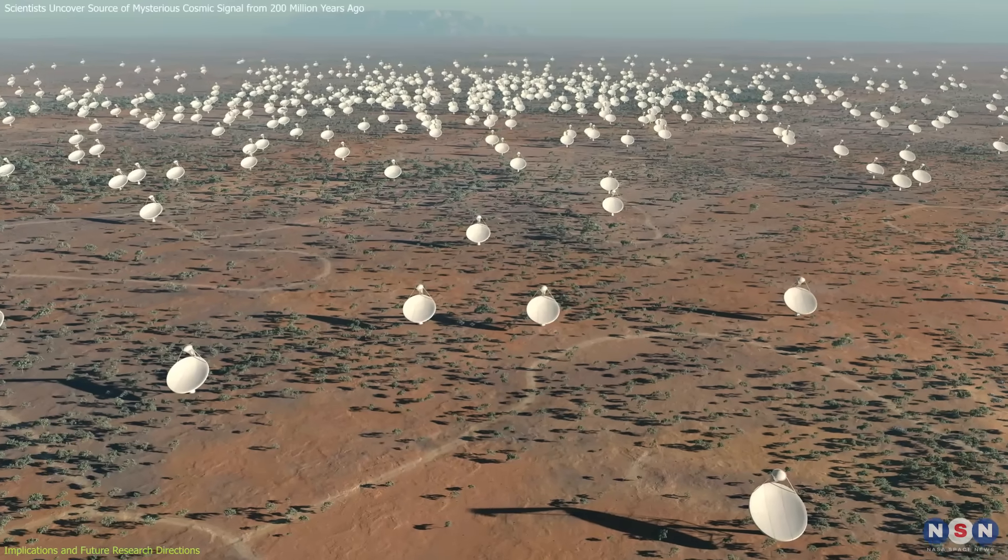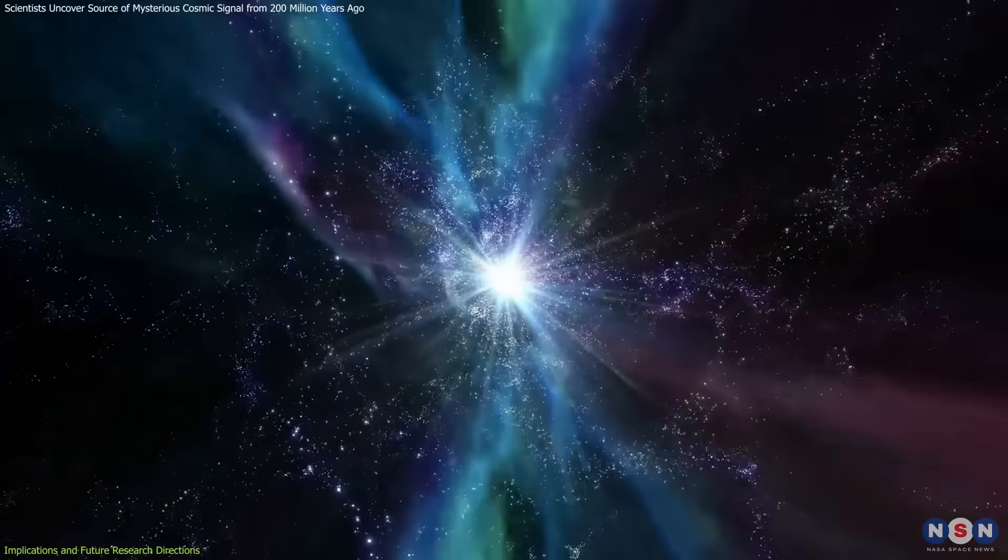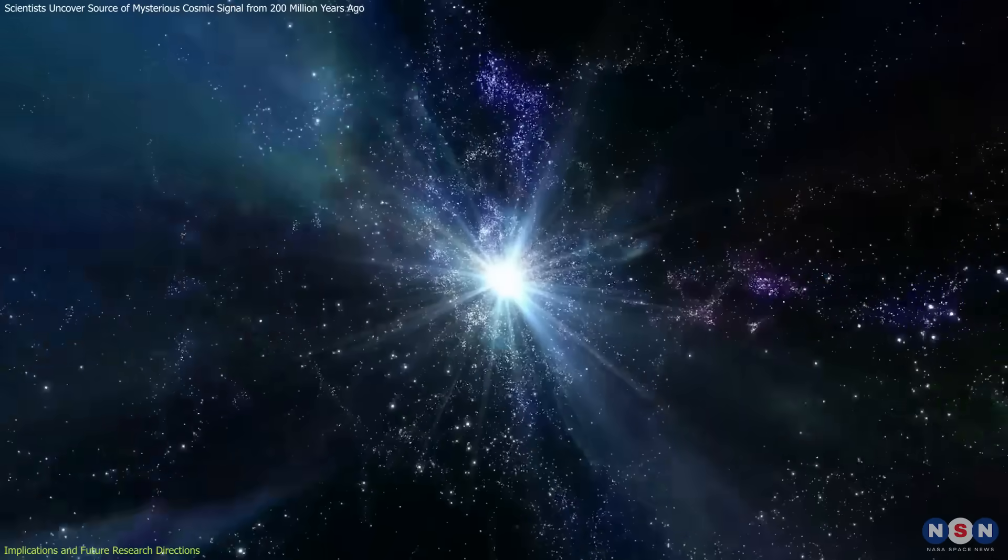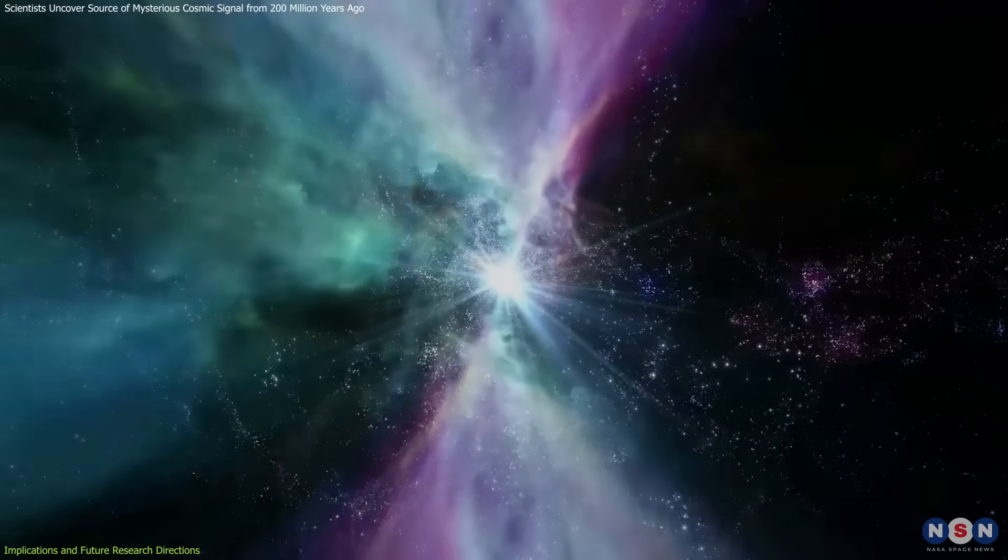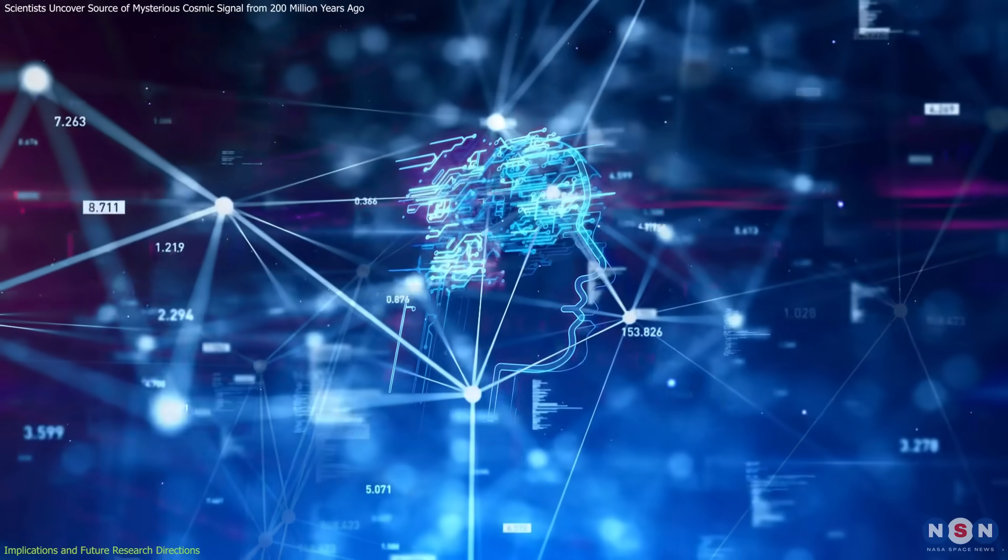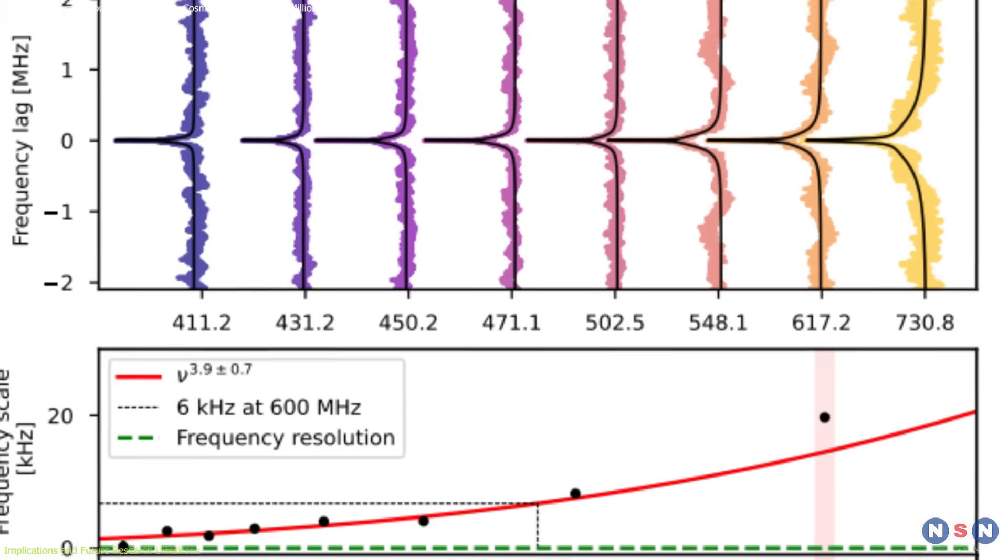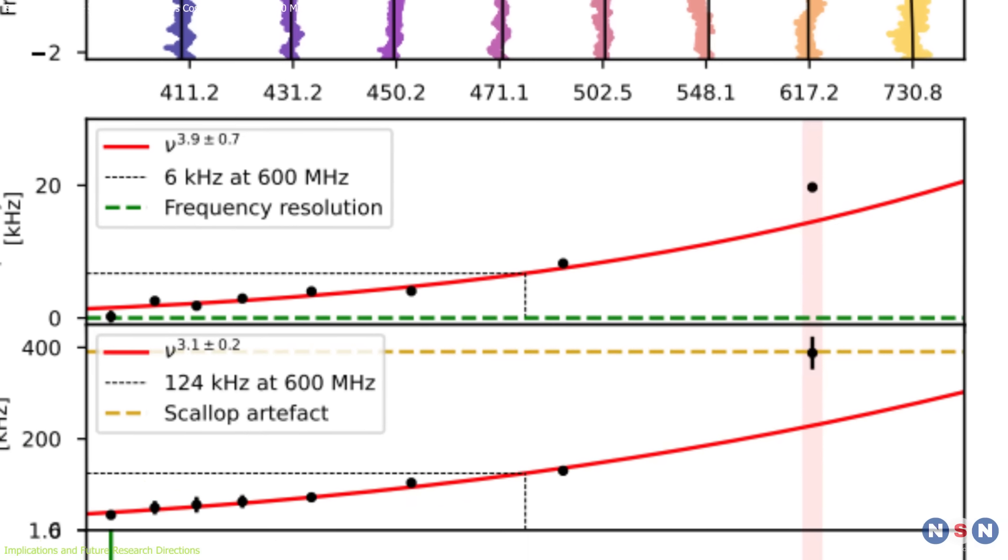Upcoming facilities like the Square Kilometer Array will play a crucial role in detecting and localizing FRBs, potentially uncovering new types of bursts and their origins. Enhanced AI algorithms may also streamline data analysis, enabling faster identification and classification of these fleeting signals.